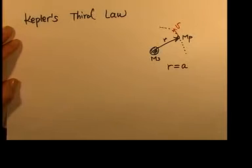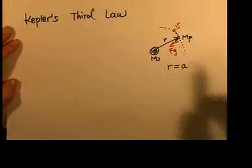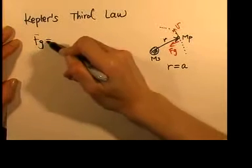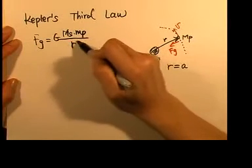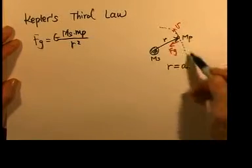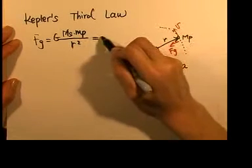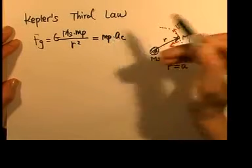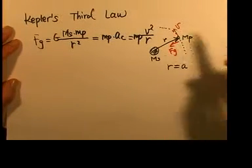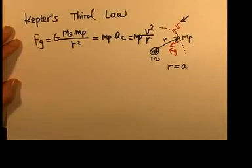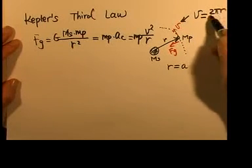The sun attracts the planet with gravitational force fg equals G times mass of sun times mass of planet divided by separation squared. Since we're assuming a circular orbit, that equals mass of planet times centripetal acceleration v²/r. The tangential speed of circular motion is v = 2πr divided by the period T.